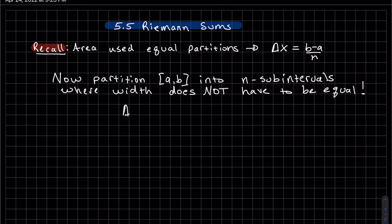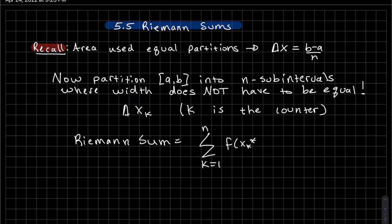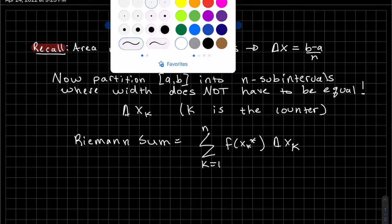We're going to call this delta x_k. Before we called it delta x because they were all the same. It has a counter now because they're not all equal. k is our counter. This is our Riemann sum.